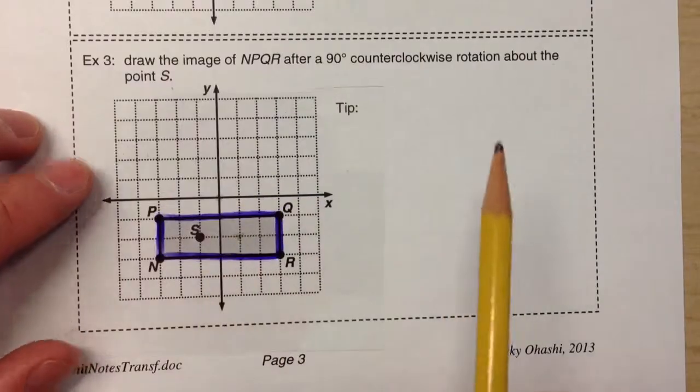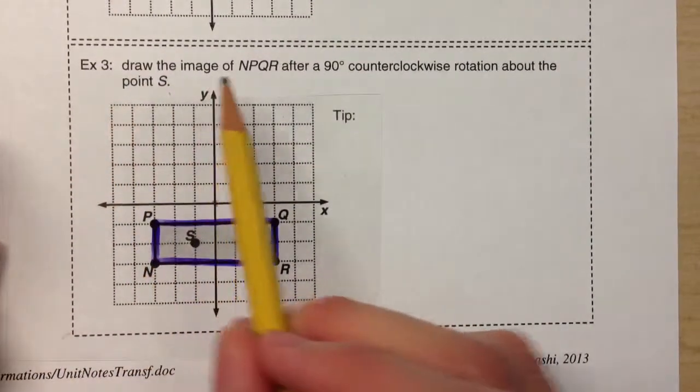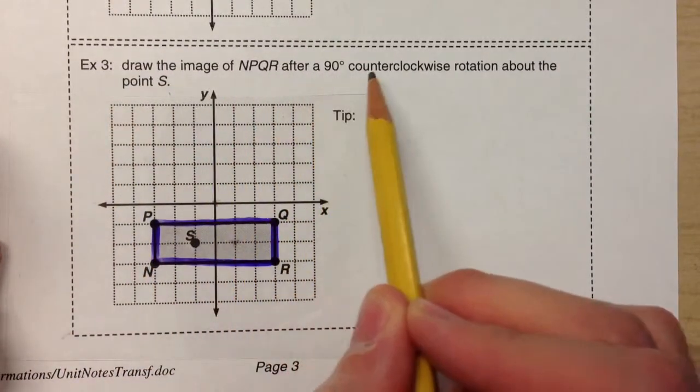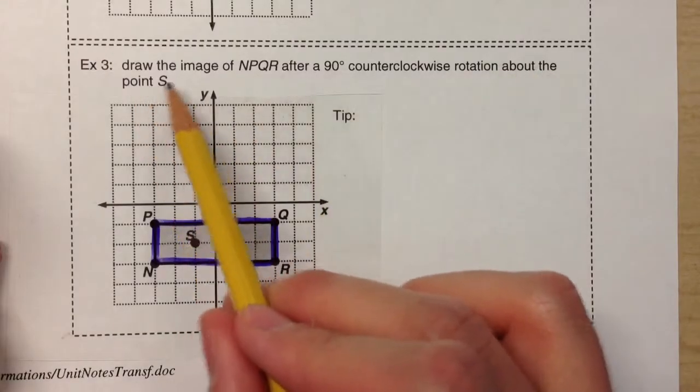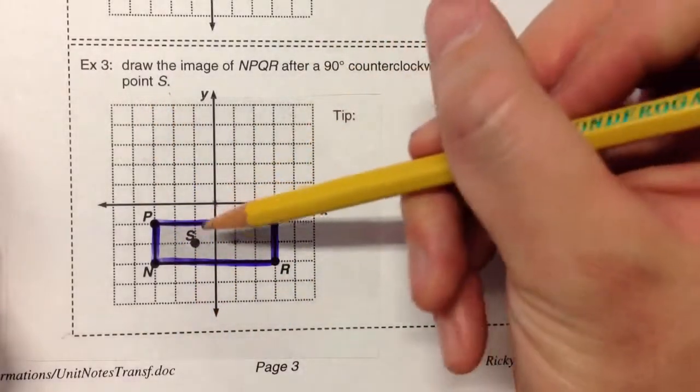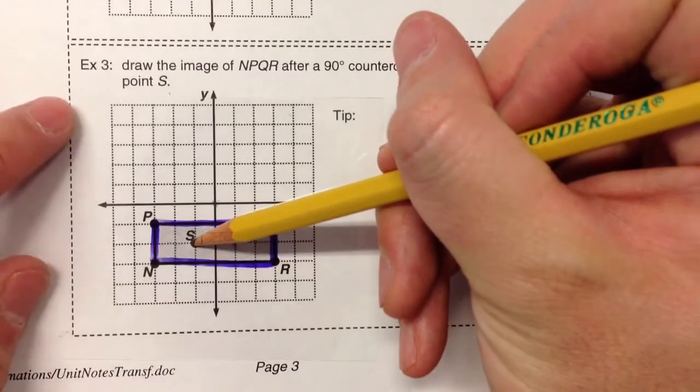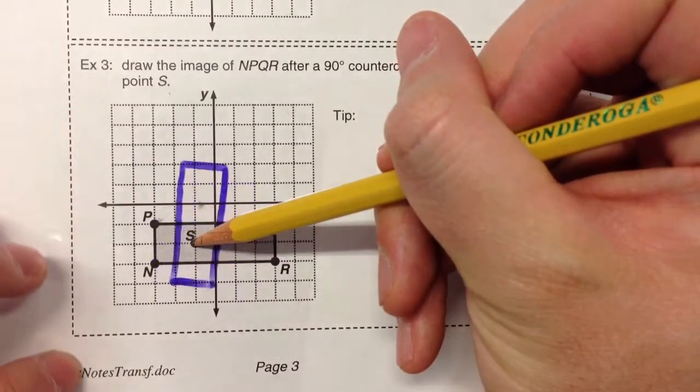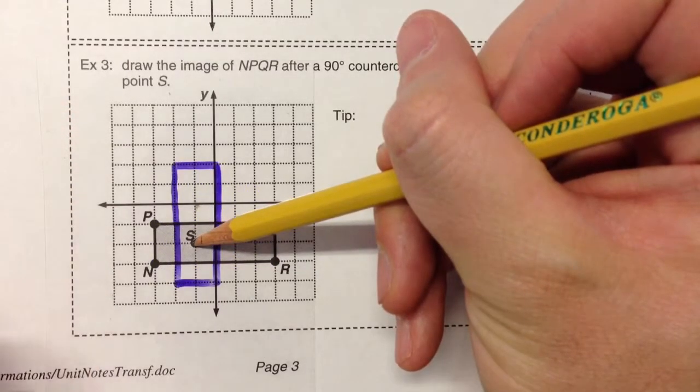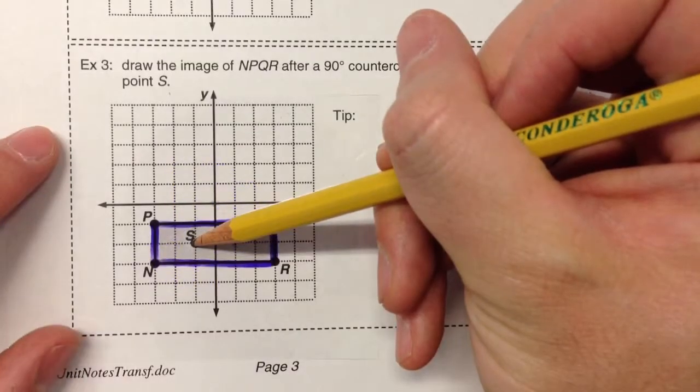However, today, as you can see in this example, we're rotating the shape 90 degrees counterclockwise about the point S. That means we're going to put our pencil point on the point S and rotate the shape from there. So it should end up right there. It's a little different as you can see.